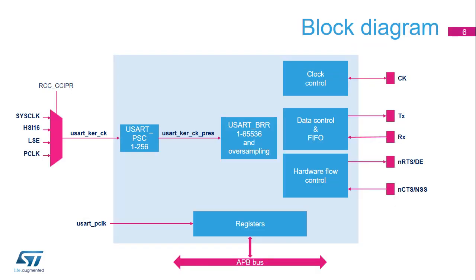This is the USART block diagram. The USART clock source can be selected from several sources: the peripheral clock (called APB clock or P-clock), the SYS clock, the high-speed internal 16 MHz oscillator (HSI16), or the low-speed external oscillator (LSE). The USART clock source is divided by a programmable factor in the USART PSC register, in the range 1 to 256.